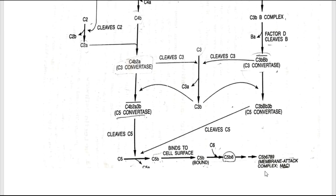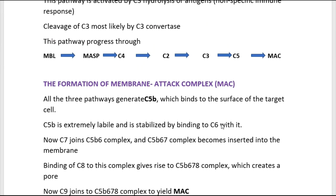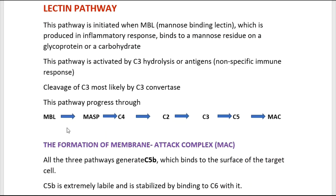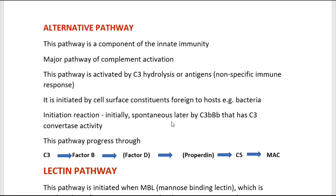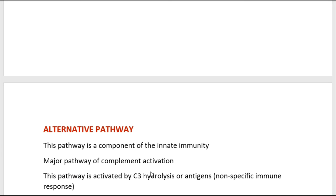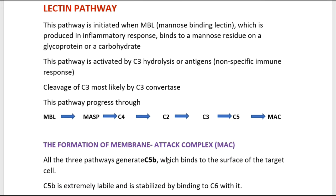With ions and molecules diffusing freely, the cell can no longer maintain its osmotic stability and is lysed by an influx of extracellular fluid and loss of electrolytes. That is how a pathogen is lysed by activating the complements through the classical, alternative, or lectin pathway. The final product is always MAC, but the initial components differ: in the classical pathway it is the immune complex initiating C1; in the alternative pathway it is spontaneous hydrolysis of C3; in the lectin pathway MBL is the initiating component.